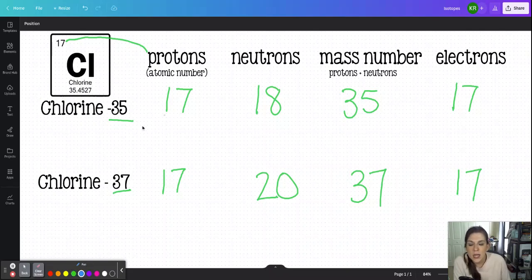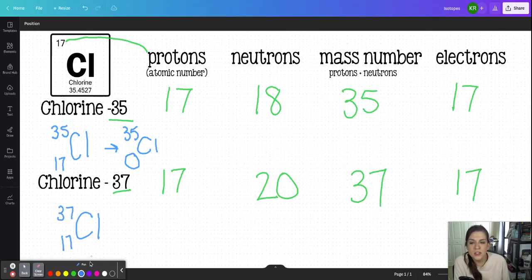So if I needed to write the isotopic notation here, I would write the symbol chlorine, I would write the atomic number on the bottom, which for chlorine, of course, is 17. And then the mass number on top of 35. You may also sometimes see this with just the chlorine and the 35, because we're assuming that everybody has a periodic table and knows that the 17 goes right there. For chlorine-37, we would do the same: chlorine with the 17 on the bottom and the 37 on top.